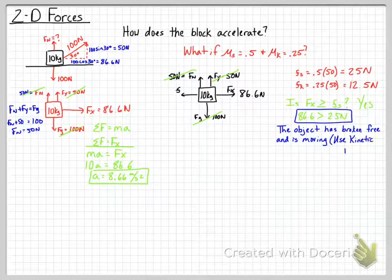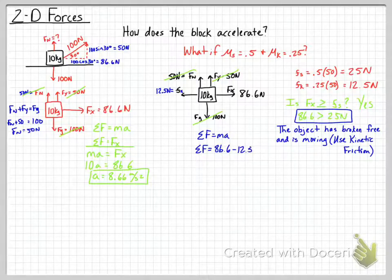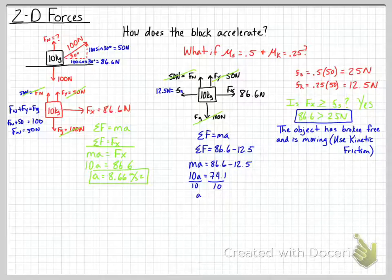Since the object has broken free, we use kinetic friction of 12.5 newtons and ignore static friction. Net force equals MA, and net force equals 86.6 newtons minus 12.5 newtons, giving 74.1 newtons. With a mass of 10 kilograms, dividing by 10 gives an acceleration of 7.41 meters per second squared.